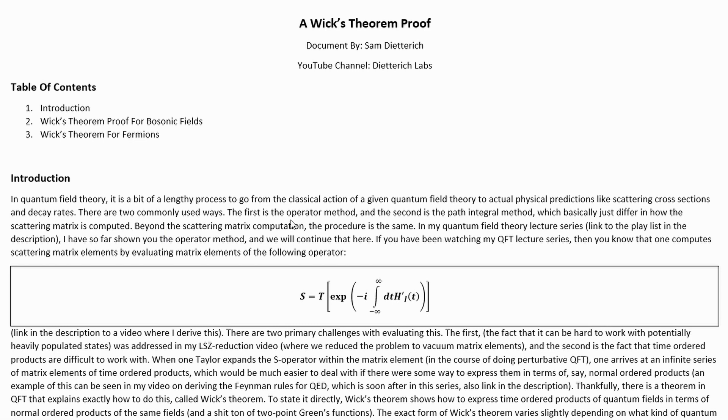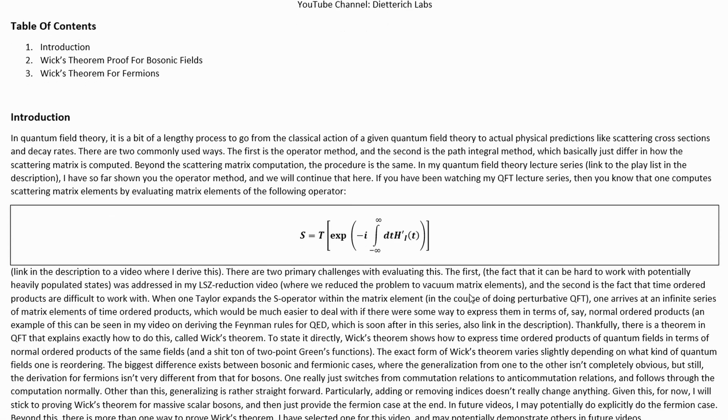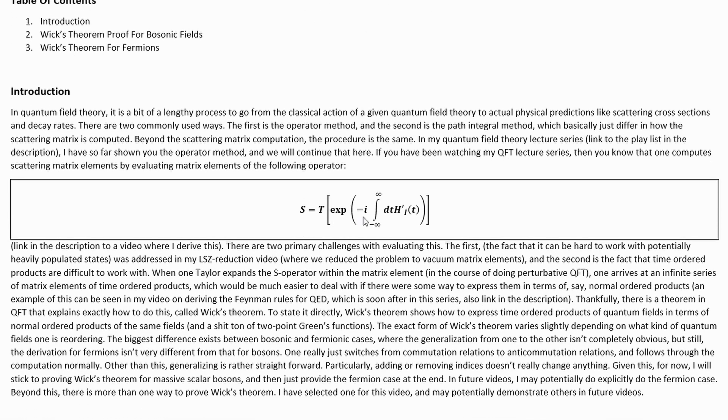There are two commonly used ways. The first is the operator method, and the second is the path integral method, which basically just differ in how the scattering matrix is computed. Beyond the scattering matrix computation, the procedure is the same. In my quantum field theory lecture series, linked to that playlist in the description, I have so far shown the operator method. If you have been watching my quantum field theory lecture series, then you know that one computes scattering matrix elements by evaluating matrix elements of this operator, the scattering operator, or S operator,